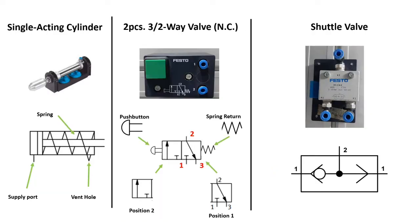And for our first example, we will be using the single acting cylinder, a three two-way directional control valve, one for the first signal input and another one for the second signal input. And of course, we will be using one shuttle valve.